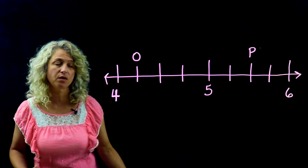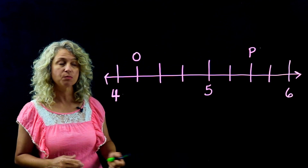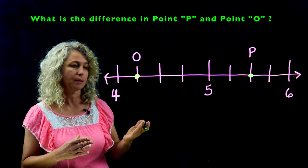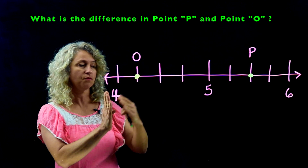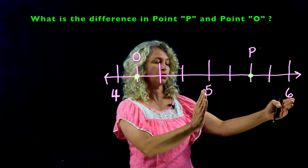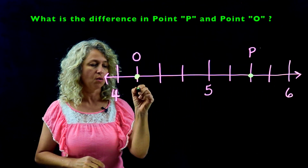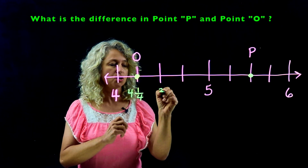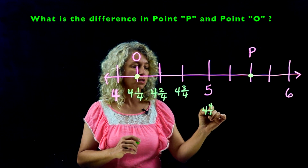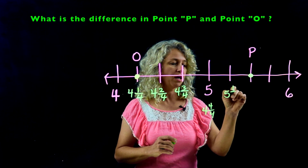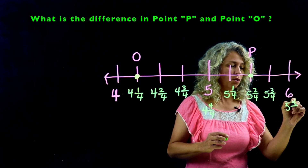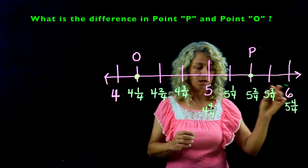What if you're asked the difference between point P and point O? First, label the number line. Count tick marks between the whole numbers: one, two, three, four — these are fourths. Label: four and one fourth, four and two fourths, four and three fourths, four and four fourths which equals five. Continue: five and one fourth, five and two fourths, five and three fourths, and five and four fourths equals six.